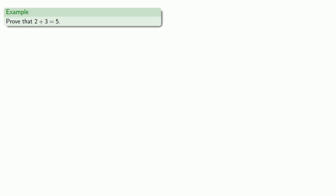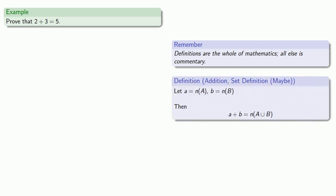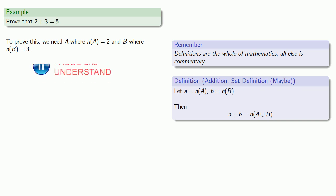So let's prove that two plus three equals five. Remember, definitions are the whole of mathematics — all else is commentary. So let's pull in our definition of addition. It looks like we need two sets: a set A where the cardinality of A is two, and a set B where the cardinality of B is three.